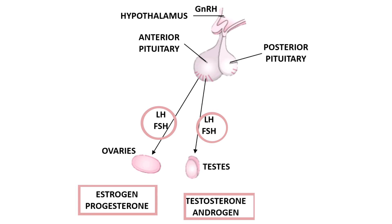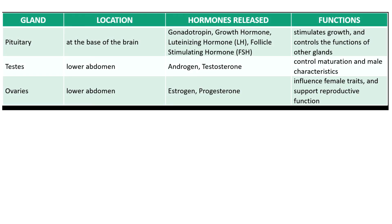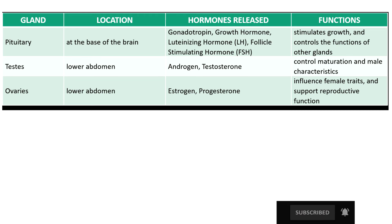These sex hormones influence physical appearance — the female characteristics or the male characteristics. The table shows the different hormones involved in influencing the male and female reproductive systems. The pituitary gland produces FSH, LH, and growth hormones, and is responsible for stimulating our growth. The testes secrete androgen and testosterone, which control maturation and male characteristics. The ovaries produce estrogen and progesterone, responsible for female traits and supporting reproductive function.